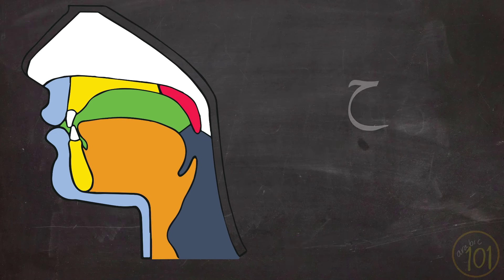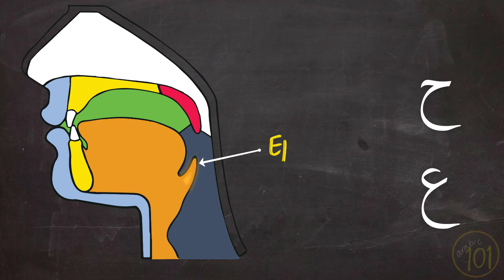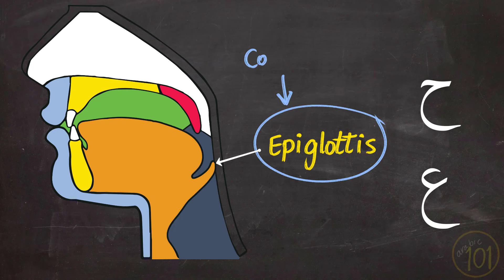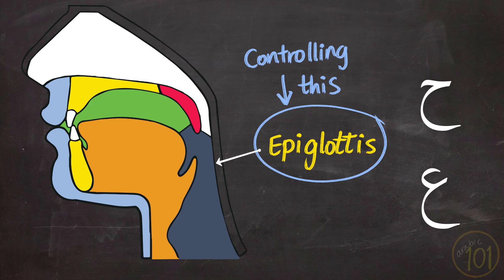As we said, Ha and Ayn come from the middle part of the throat. But to be more specific, from an organ called the epiglottis, which is that small flat part at the back of the tongue that closes when you swallow to prevent food from entering the tube that goes into your lungs. So, controlling that area is the most important thing to learn to produce Ha and Ayn successfully.